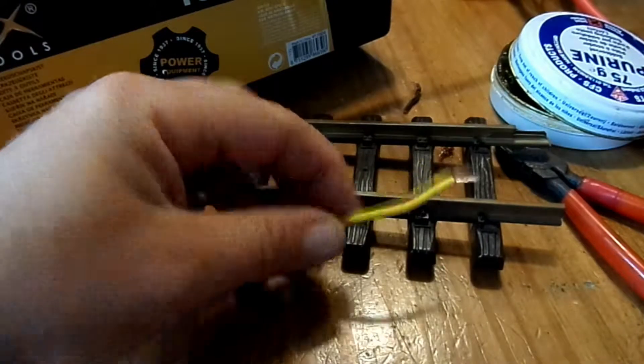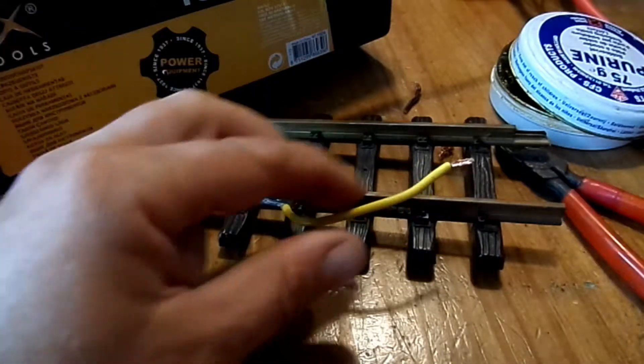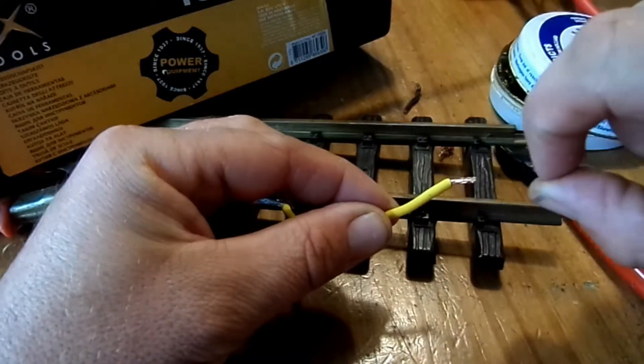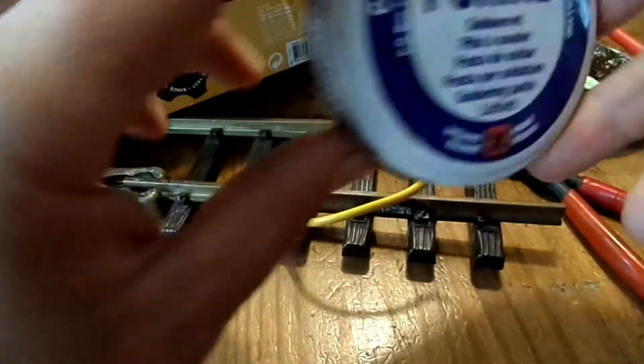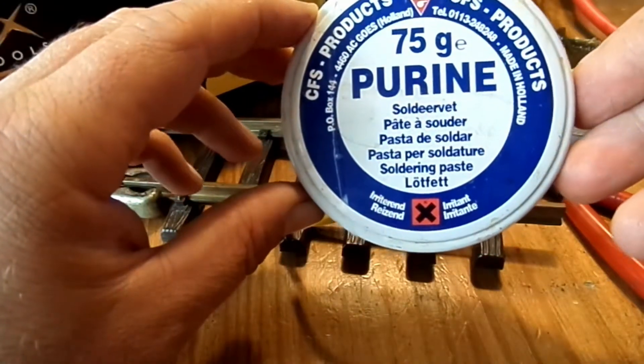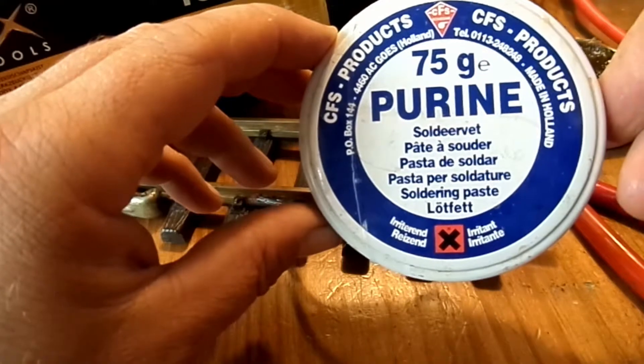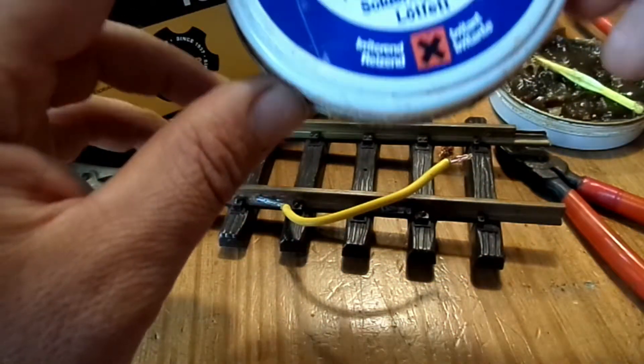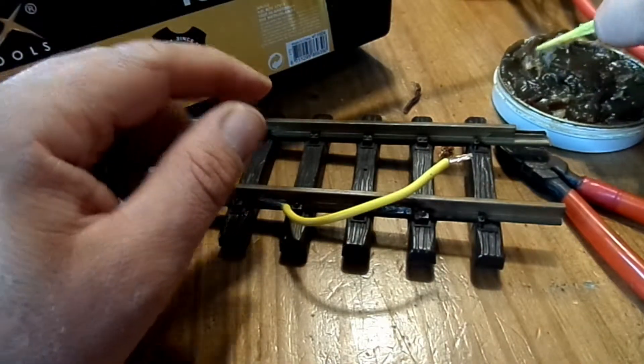This wire again to this piece of track. Now what I want to do is strip off the wire, twist it together. Then I'll use this stuff—it's soldering paste. It's acid-free... well, it has got acid in here.